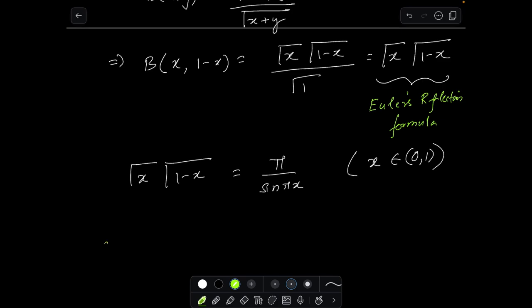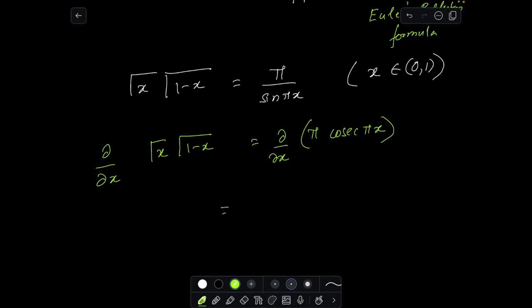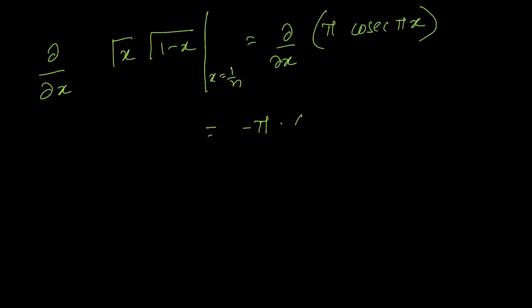Euler's reflection formula says gamma x gamma 1 minus x is π by sin π x, of course x has to be between 0 to 1. So what I am going to do is I have to do the partial derivative of gamma x gamma 1 minus x, which means you have to do a partial derivative of π cosec π x.